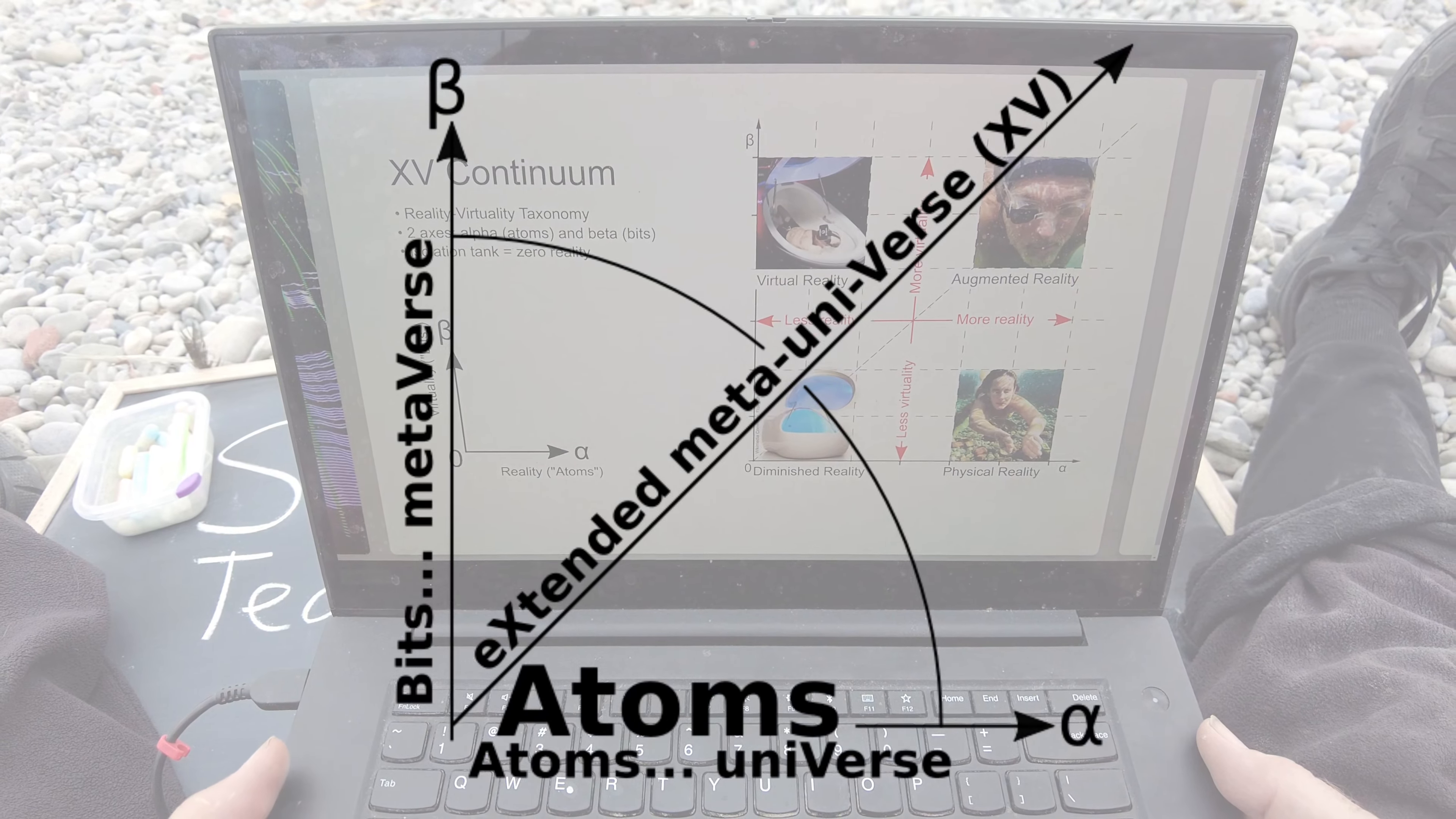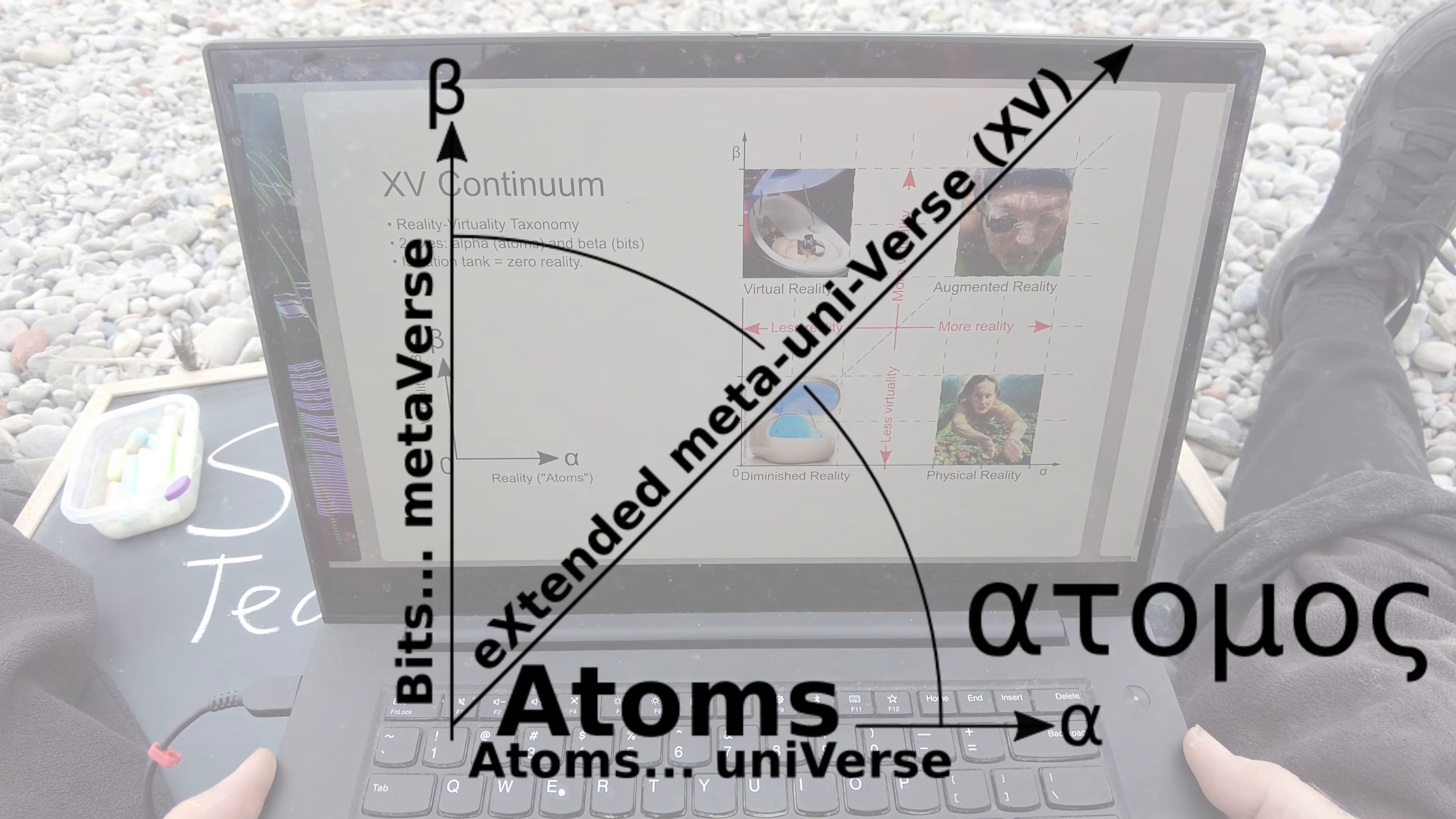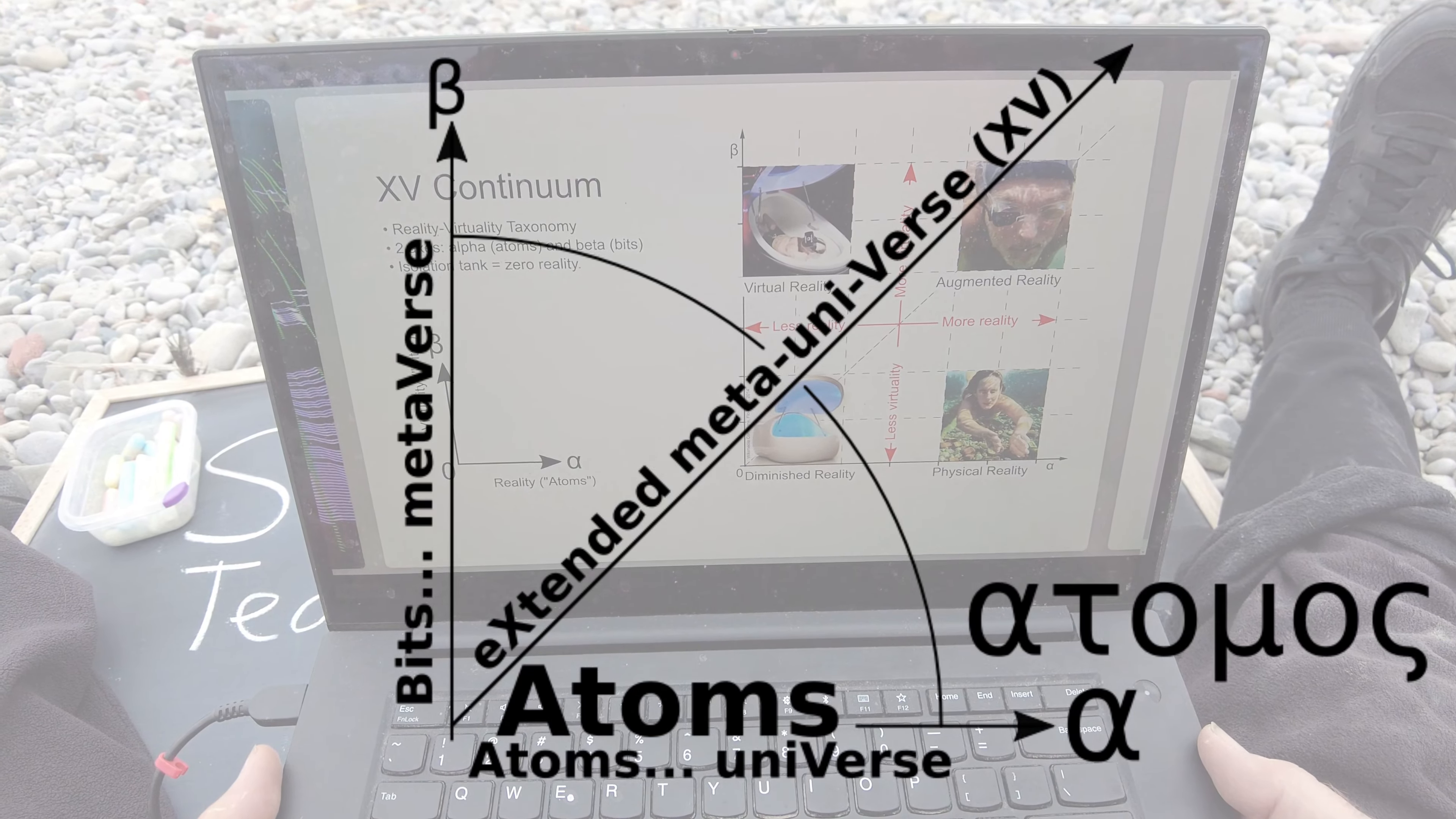There's two axes in the extended verse. We label them reality, which is the universe made of atoms. We label that alpha. The word atom is a Greek word and the first letter of that word is alpha. So we label the reality axis alpha, the axis going from left to right.